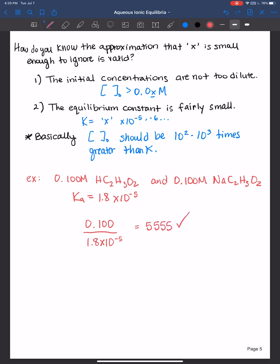So if we divide by the Ka, we get 5,555. So this number, the initial concentration indeed is over 10 to the 2nd and 10 to the 3rd times greater than the Ka value. So X was small enough to ignore and that was a valid assumption.